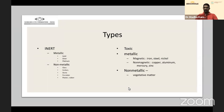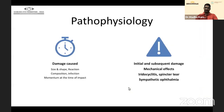Metallic toxic foreign bodies include iron, steel, and nickel — which are magnetic — and non-magnetic ones include copper, aluminum, mercury, and zinc. Knowing the material is important for management: if it is magnetic, you need an intraocular magnet on your table; if non-magnetic, you may have to resort to foreign body forceps.